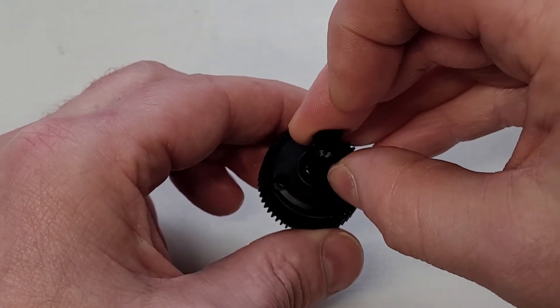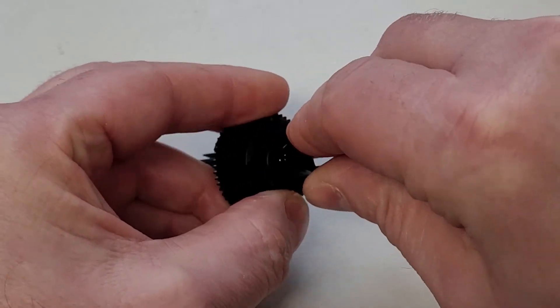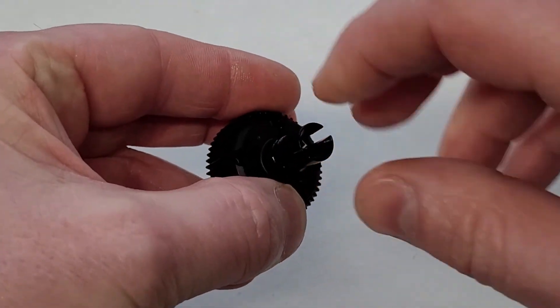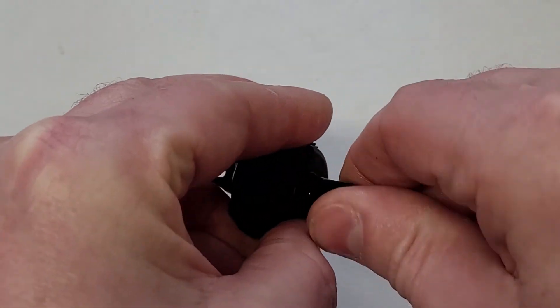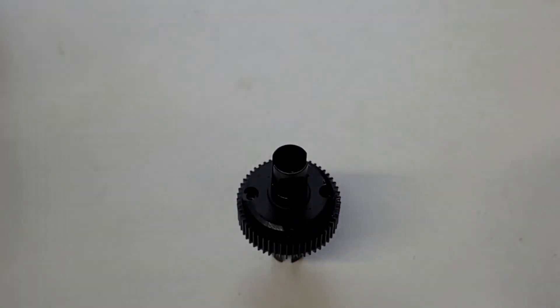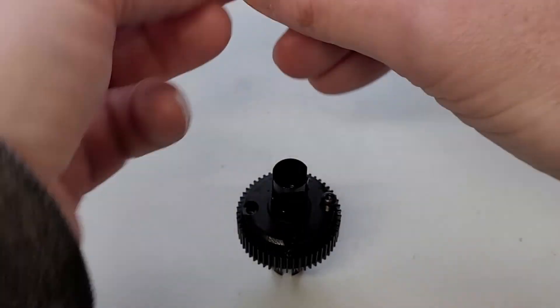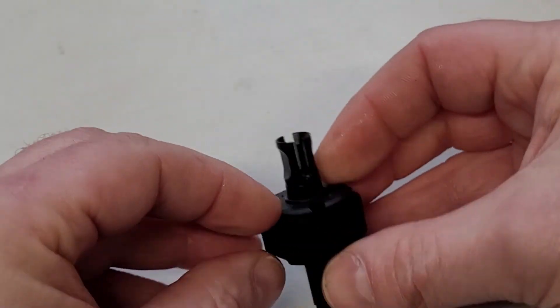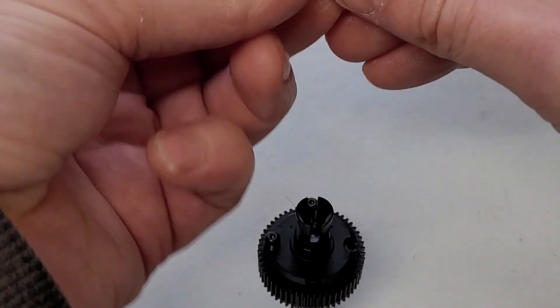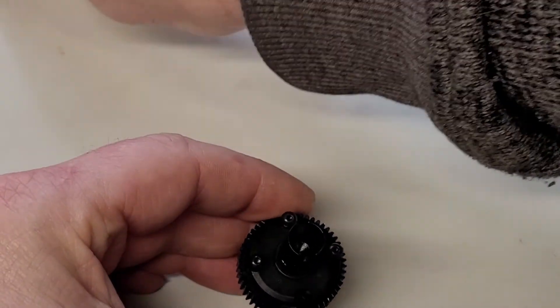So we put the diff top on like that. I'm just going to hold it tight and just work it—that feels nice and smooth. And then we've got these 1.5mm bolts to tighten up and close the diff case up.